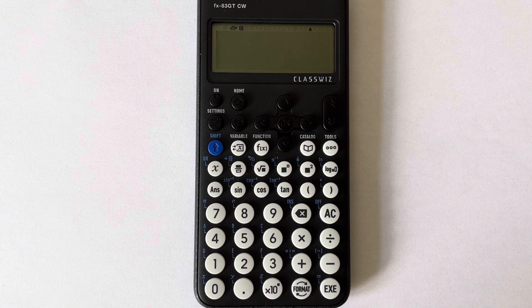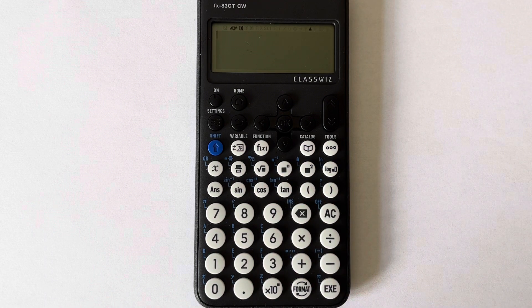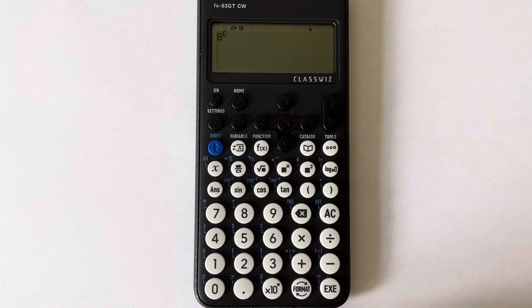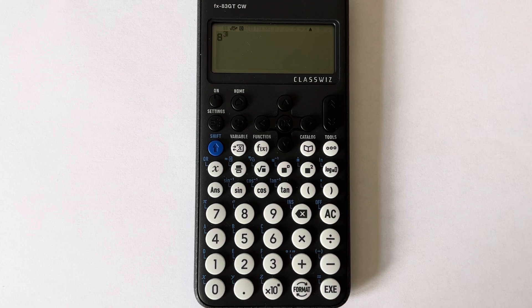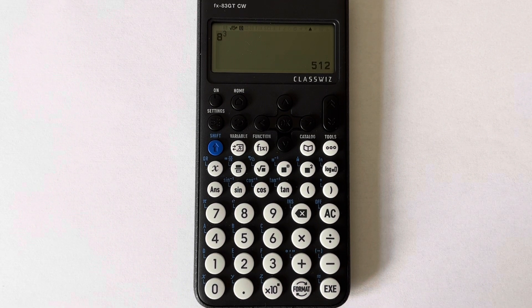So the power key is here. Let's work out 8 cubed. We're typing 8, then press the power key and put a little 3 in the box there. Press the equals and we get an answer of 512.